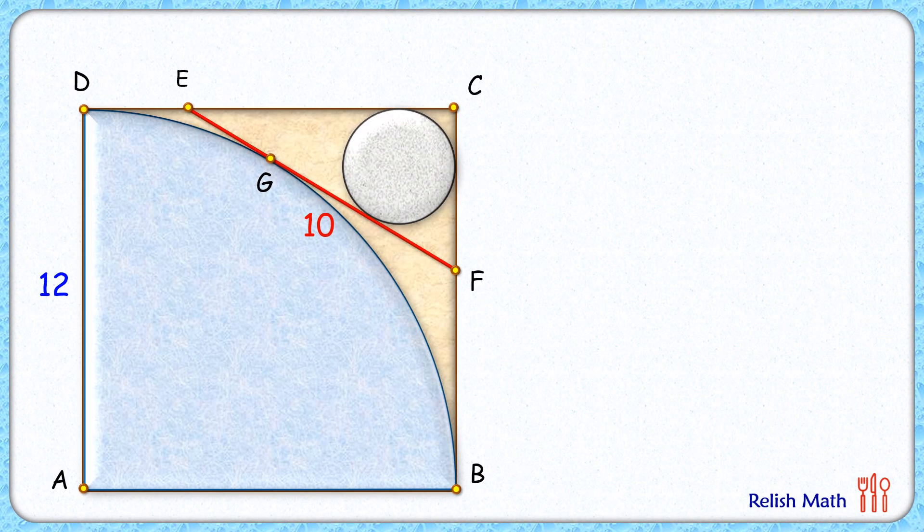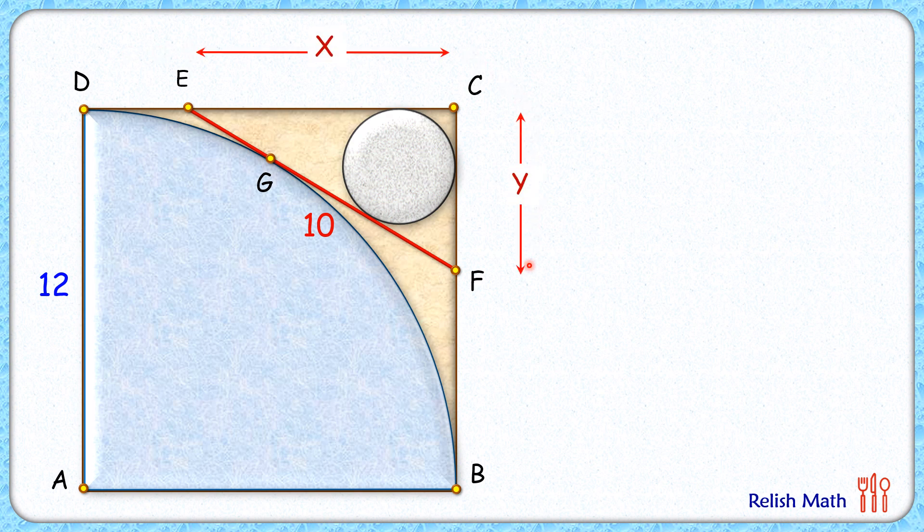Let's check the solution. Let's assume the length EC is x centimeters and the length CF is y centimeters. Thus the length DE, since the side length of the square is 12 centimeters, will be 12 minus x.